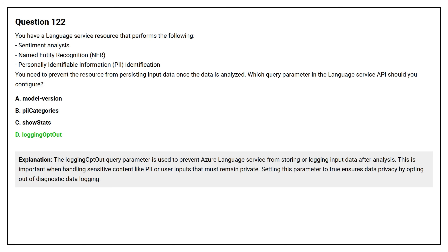The Logging Opt-Out query parameter is used to prevent Azure language service from storing or logging input data after analysis. This is important when handling sensitive content like PII or user inputs that must remain private. Setting this parameter to true ensures data privacy by opting out of diagnostic data logging.